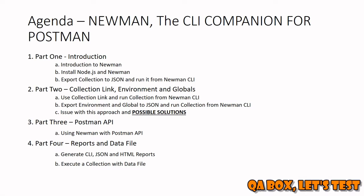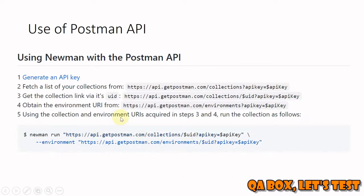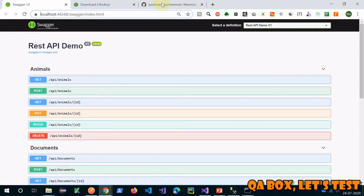So these are the steps you have to follow when using Newman with the Postman APIs. First, you have to generate an API key. With the help of that API key, you are going to get a list of collections. You then identify your collection from that list and read its UID. Once you have the UID, you pass that UID and the API key to access your collection, and it will always be the latest updated one. The same way you can also access your environments.